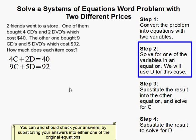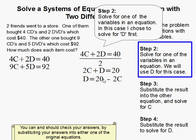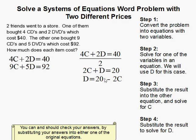The second step is to solve for one of the variables in any of the equations. I picked solving for D in this case. You can solve for C first if you wanted to. The order doesn't matter. So, I divided the first equation by two. That gave me 2C plus D equals 20. And if you just subtract 2C from both sides, you get D equals 20 minus 2C. So now I have an expression for D.